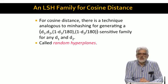In particular, for any distances D1 and D2, with D1 less than D2, we can view this family as D1, D2, 1 minus D1 over 180, 1 minus D2 over 180 sensitive. This is exactly the way we view the minhash functions except for the scaling factor of 180 because of our decision to measure angles in units of degrees. The LSH family is called random hyperplanes.